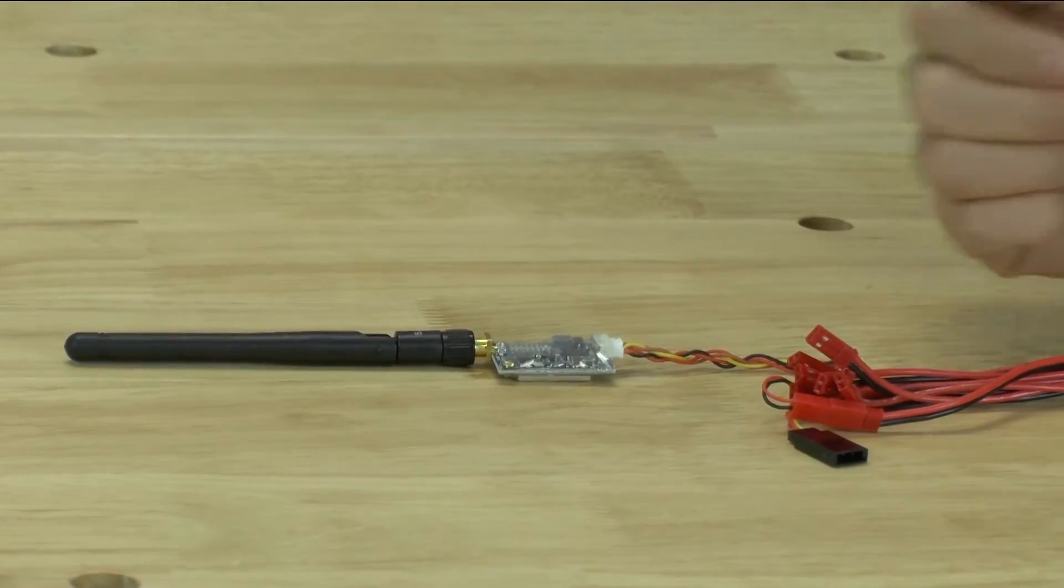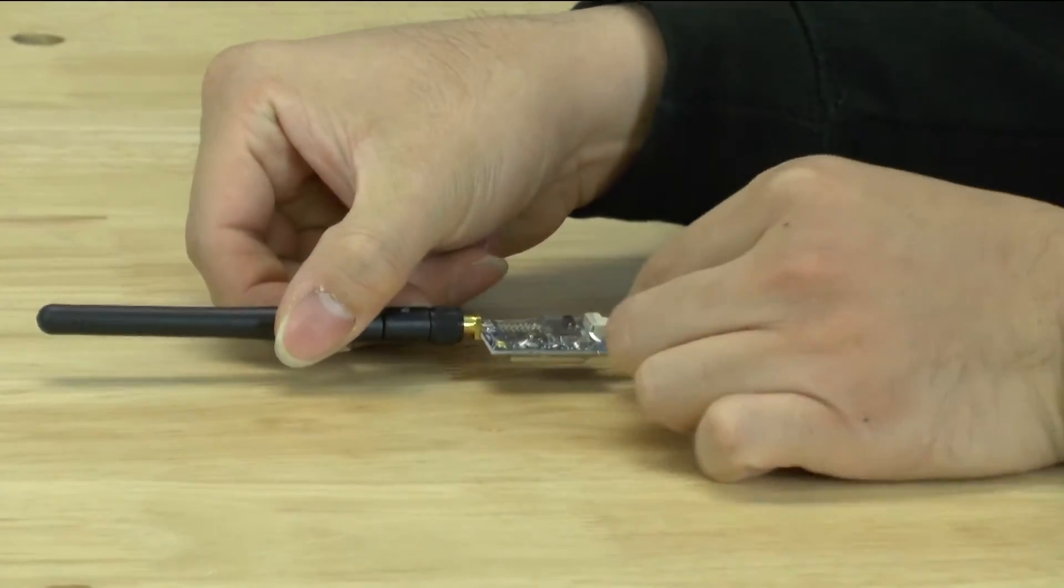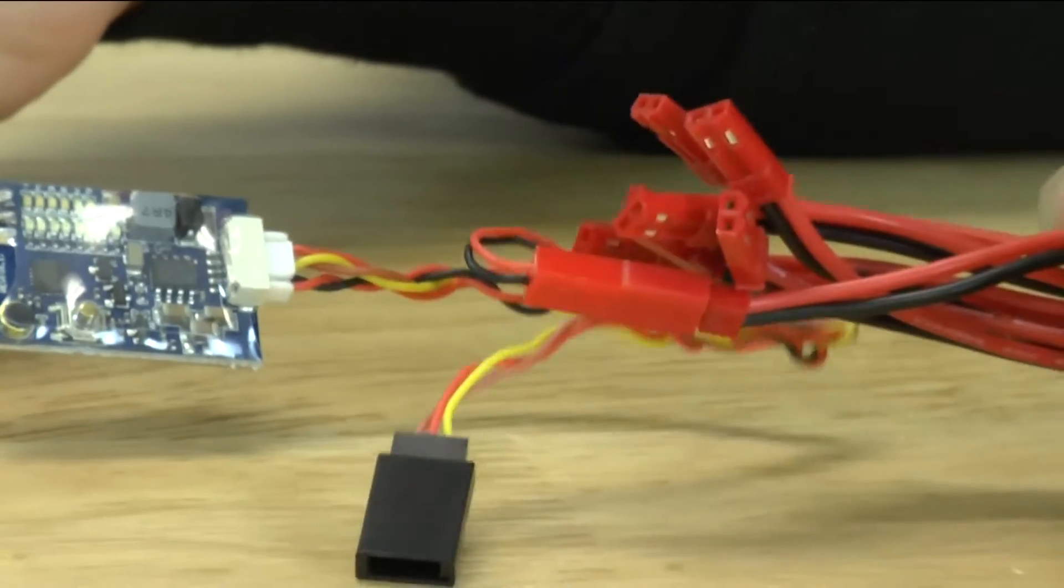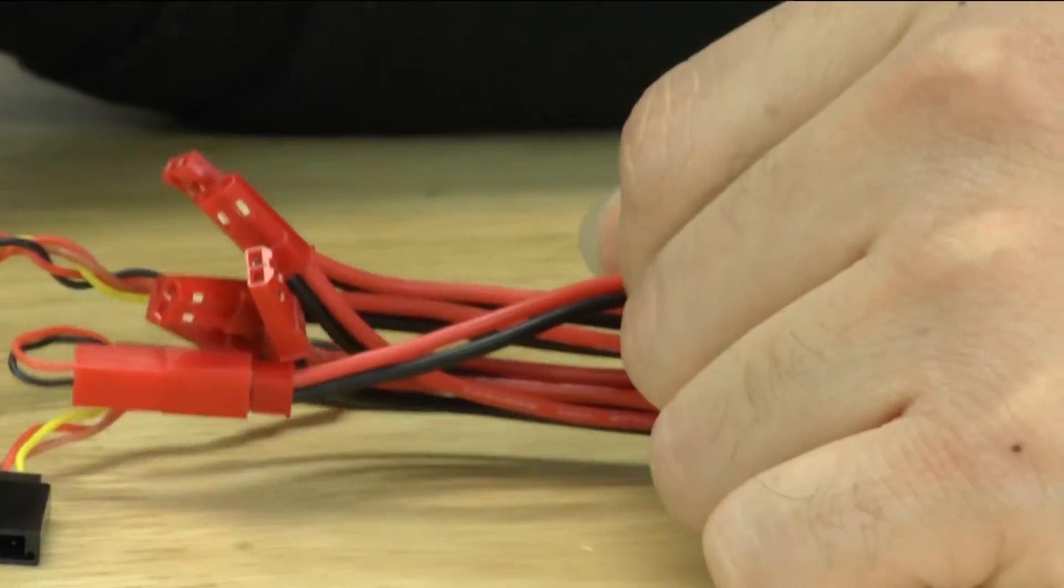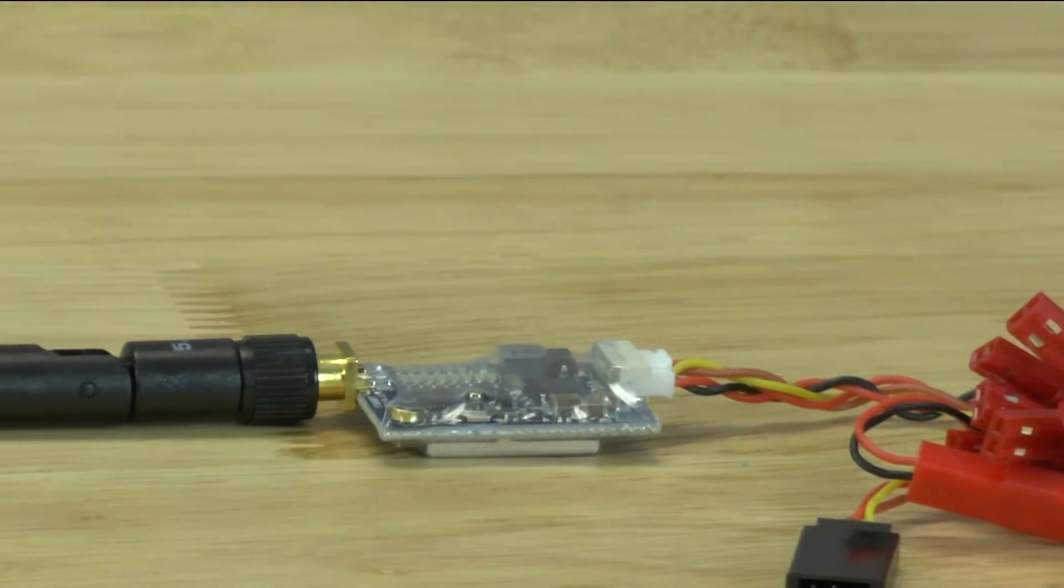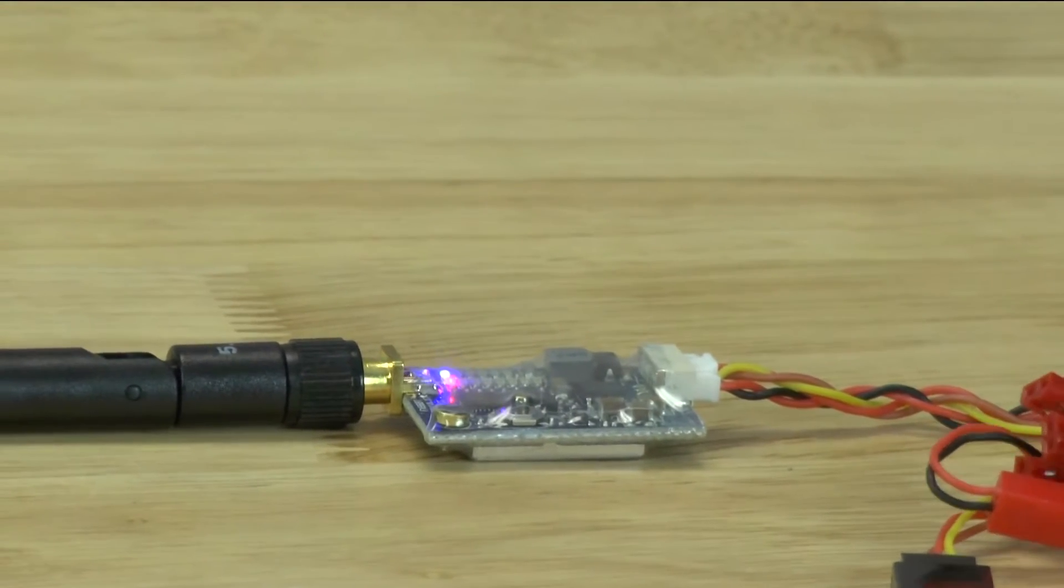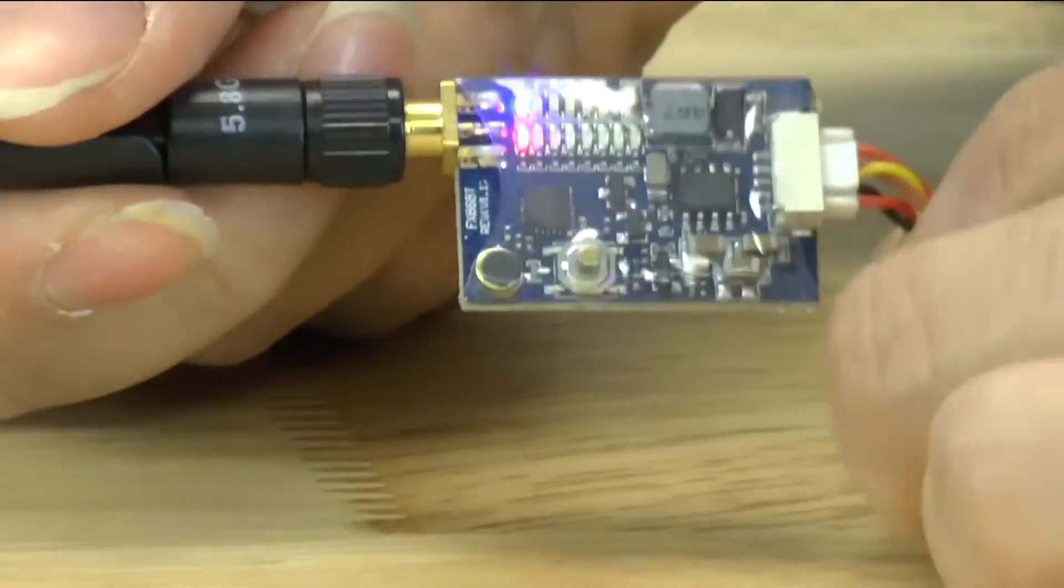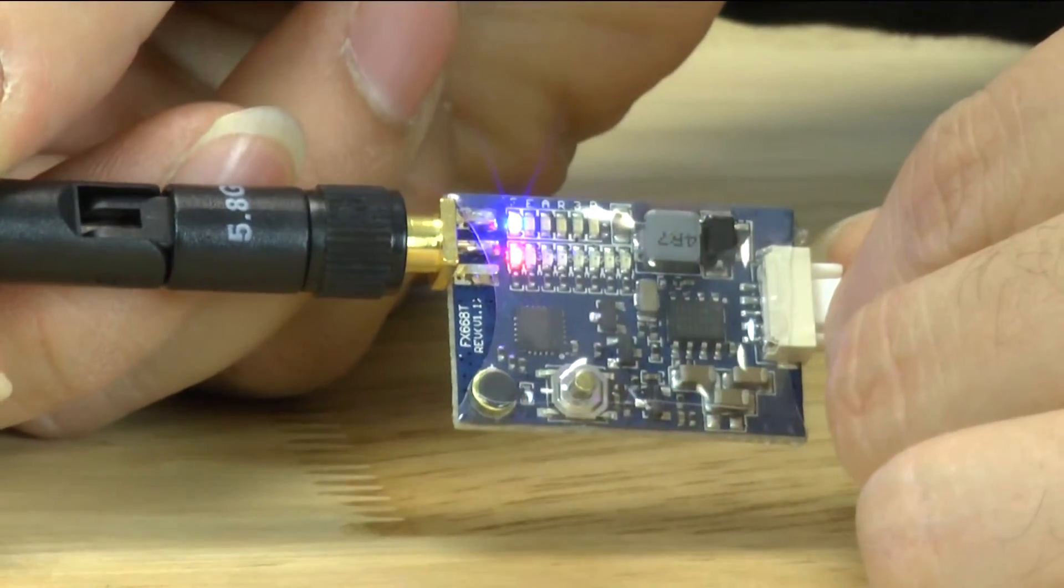So we went ahead and hooked everything up which is pretty simple for VTX. We put on the antenna and then we plugged in the cable and on the other side we connected it to a cable which we can connect to a 3 cell battery. So that's what I'm going to go ahead and do. I'm going to plug in the 3 cell battery. Once you plug it in you'll notice the LED lights come on. This is pretty standard for this type of VTX.